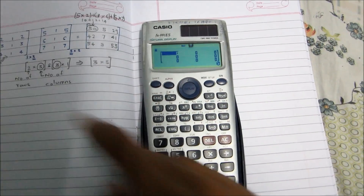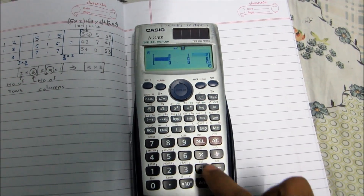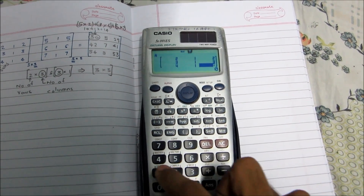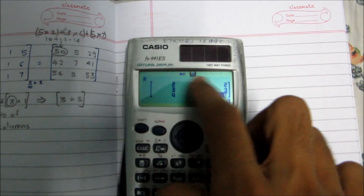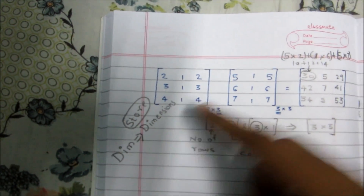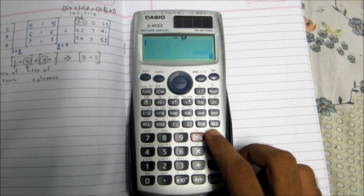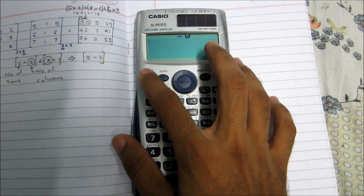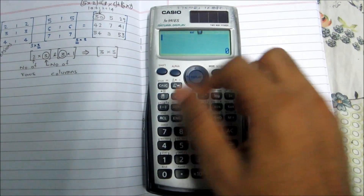Now store this matrix. As you can see, we enter the values: 2, 1, 2, 3, 1, 3, 4, 1, 4 — same as in our example. Then press AC. We have stored the first matrix, Matrix A.